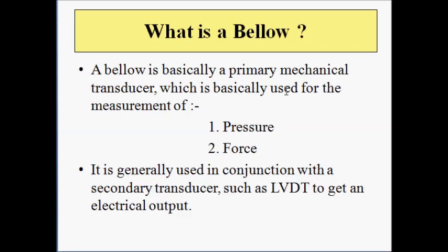Primary transducer means that it converts pressure or force into suitable mechanical motion or displacement. Generally it is used in conjunction with a secondary transducer such as LVDT so that we can get an electrical output in terms of voltage or current. So basically a bellow is a primary transducer used for measurement of pressure and is generally used in conjunction with a secondary transducer.